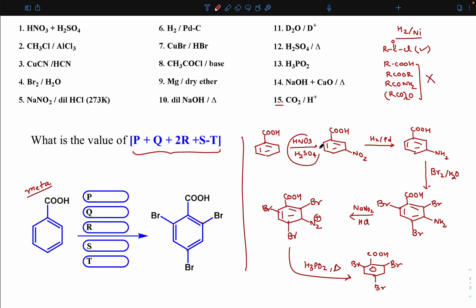Now please fill the box. HNO3 H2SO4 is value 1, then H2 palladium is the sixth number, then Br2 water is the fourth number, then NaNO2 HCl is the fifth number, finally H3PO2 that is thirteenth number. Now simply keep these values: P is 1 plus Q is 6 plus 2R meaning is 8 plus S meaning is 5 minus T is 13.